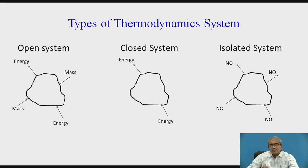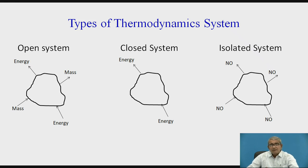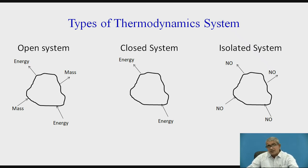This is related to the definition of thermodynamics and the systems of thermodynamics. Systems are of three types: open system, closed system, and isolated system. In the closed system, only energy is transacted from system to surrounding and surrounding to system; mass remains constant. In the isolated system, there is no transaction — no mass and no energy transmitted from system to surrounding and surrounding to system.